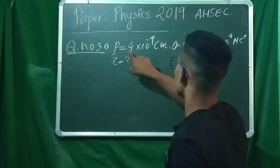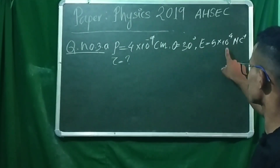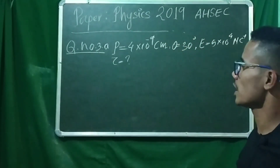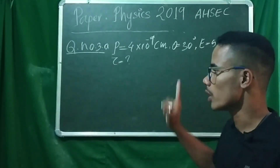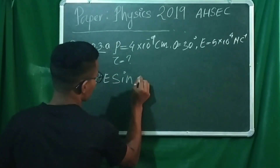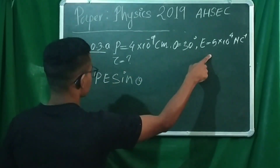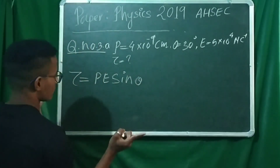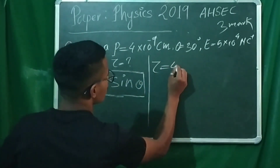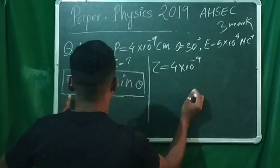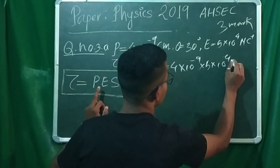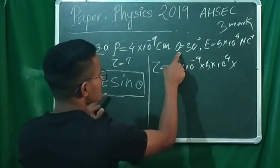Here, P is the electric dipole moment, E is the strength of the electric field, and theta is the angle. The formula is tau equals P E sin theta. So tau is equal to P E sin theta, where P equals 4 into 10 raised to the power minus 9, E equals 5 into 10 raised to the power 4, and theta equals 30 degrees.